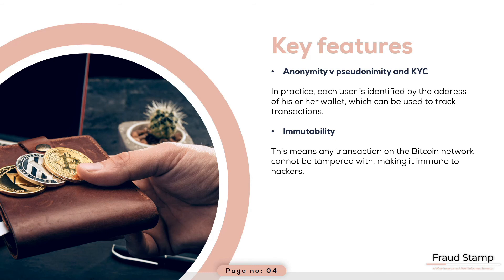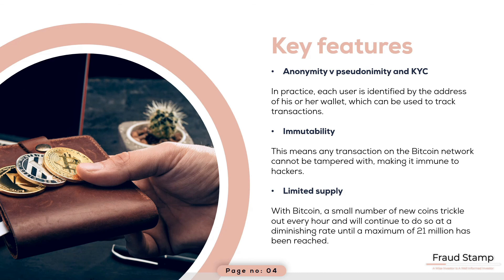Another attribute of Bitcoin that takes away the need for central banks is that its supply is tightly controlled by the underlying algorithm. With fiat currencies — dollars, euros, yen, etc. — central banks can issue as many currency units as they want and can attempt to manipulate a currency's value relative to others. Holders of the currency, especially citizens with little alternative, bear the cost. With Bitcoin, a small number of new coins trickle out every hour, and will continue to do so at a diminishing rate until a maximum of 21 million has been reached. This makes Bitcoin more attractive as an asset — in theory, if demand grows and the supply remains the same, the value will increase.